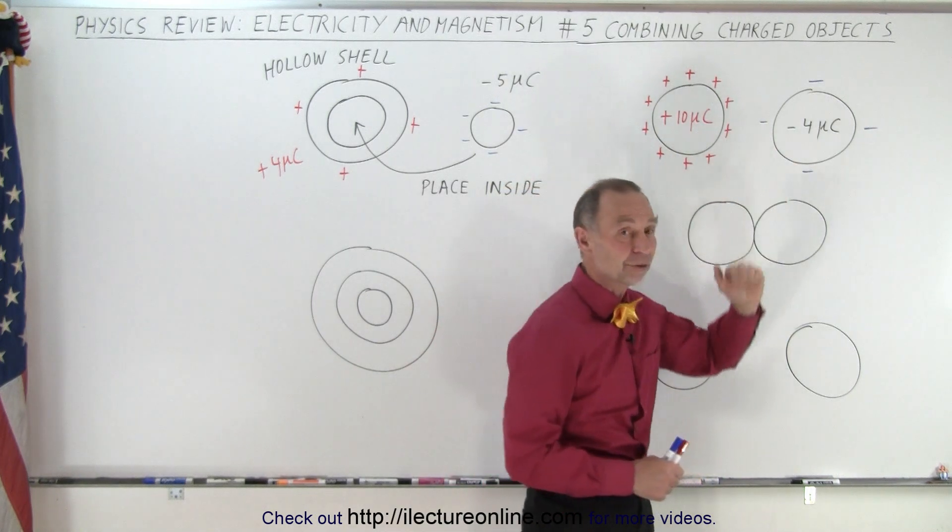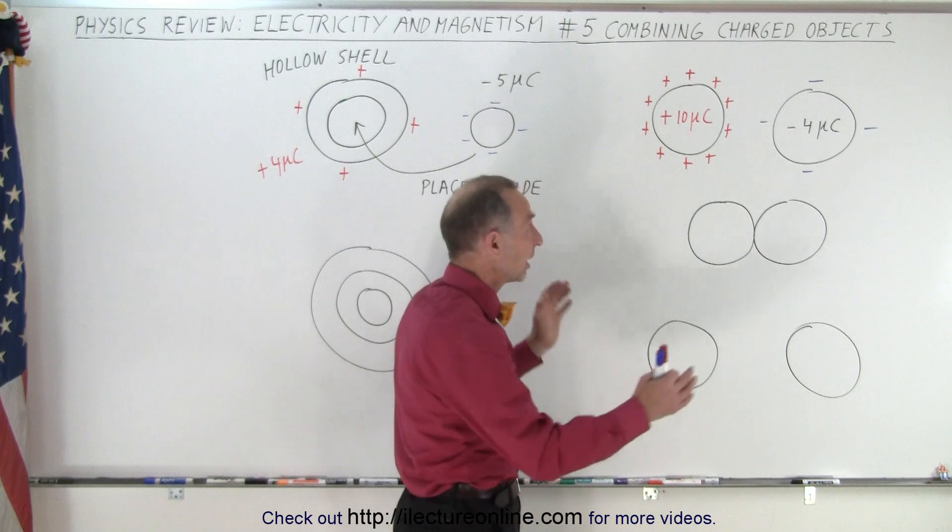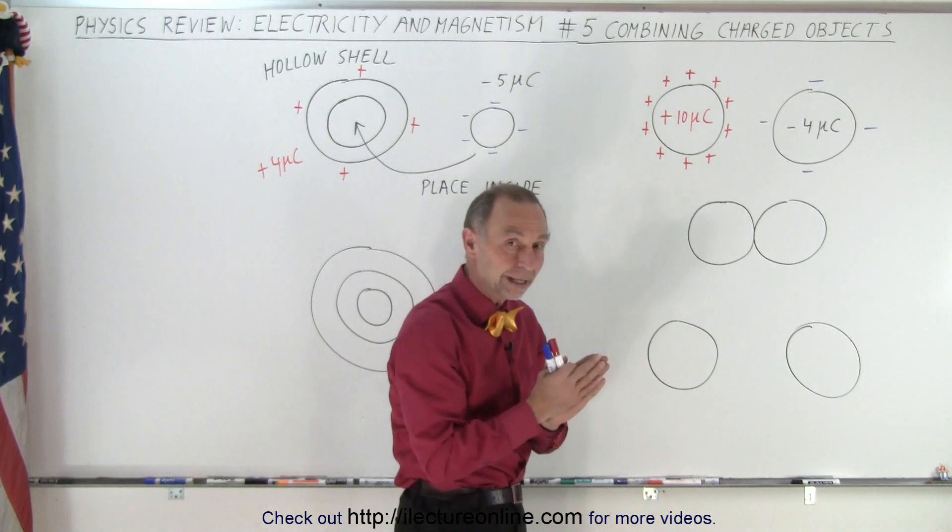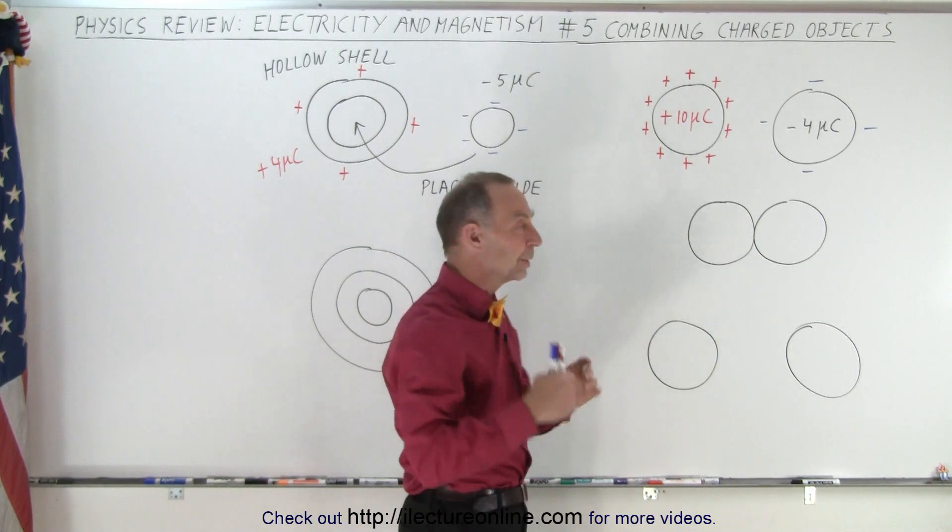We have a second conductor that has an extra minus 4 micro coulombs on its surface. Now we bring them together so that they touch and then we pull them apart again. What will be the result?